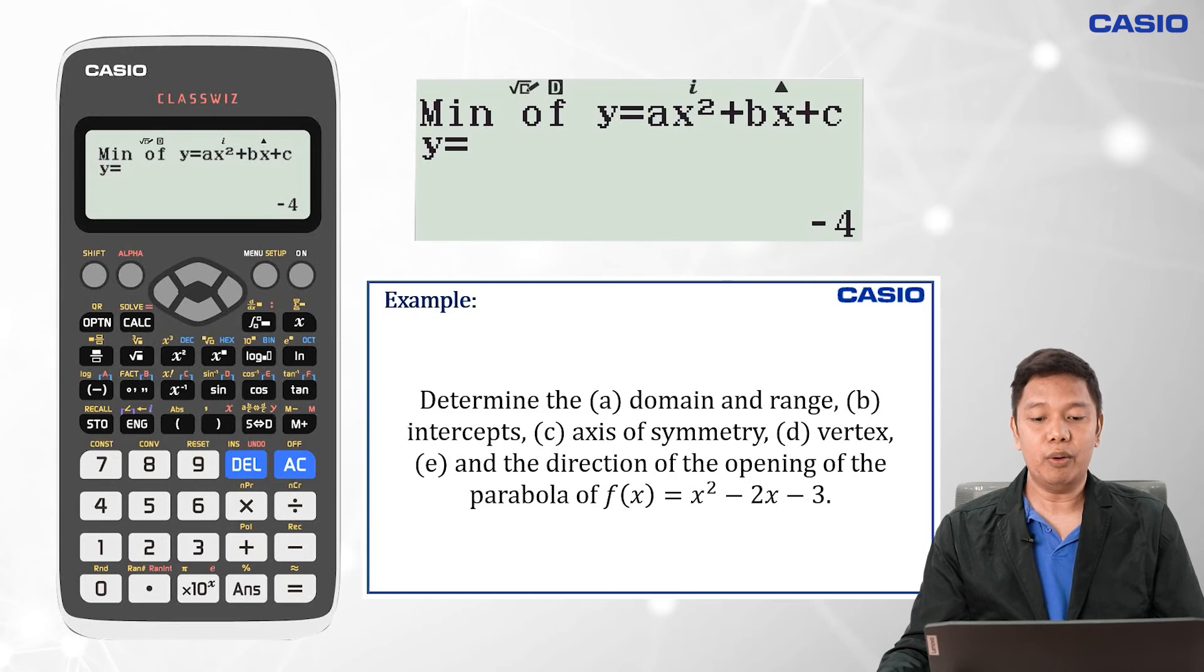Now for our axis of symmetry, we need to equate the x-coordinate of the vertex, which is 1, to x. So you have x equals 1, or x minus 1 equals 0. And of course, our vertex is at the point (1, negative 4). To see the graph of this quadratic function,